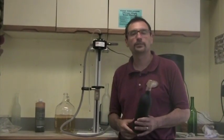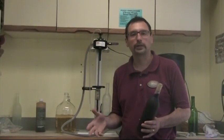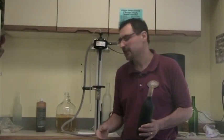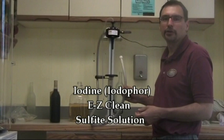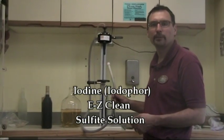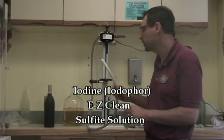Okay, once you have all your bottles corked, then it's a good idea to run some sanitizer through your bottle filler. That kind of cleans it out, gets all the stickiness out of it. So I've made up a solution of iodine-based sanitizer. You can also use some Easy Clean, One Step, sulfite solution will also be good.